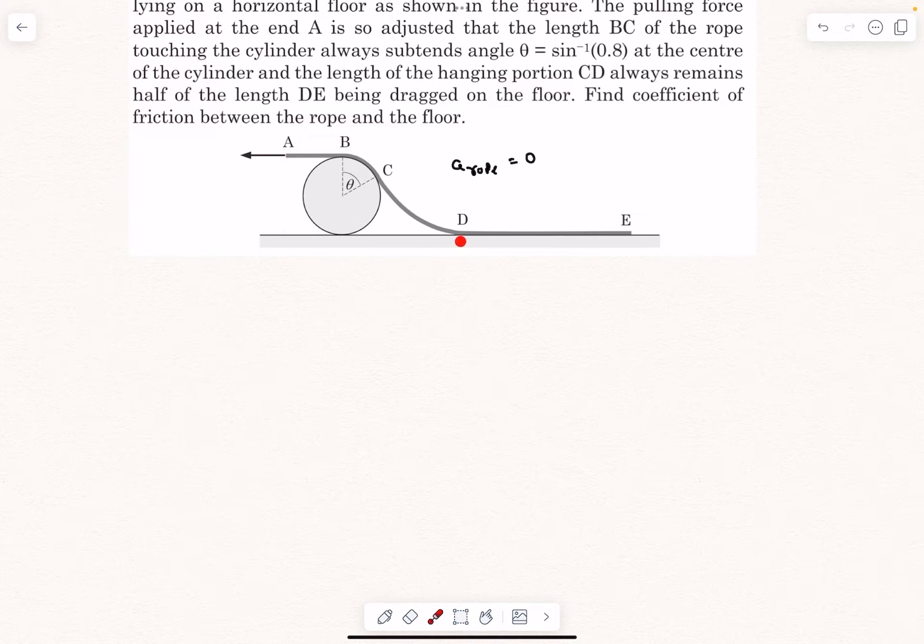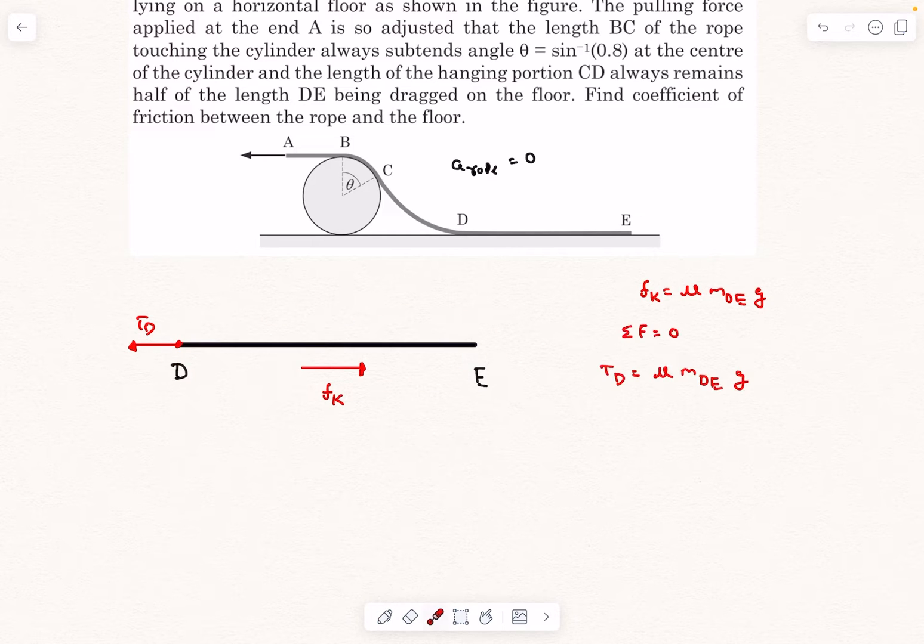First let's draw the FBD of this part of the rope DE. We can use force balance. At this particular end let's call the tension at end D as T_D. Now obviously as the rope is slipping against the floor there will be some kinetic friction force acting. Let's call it as F_K, and we can directly write F_K as the coefficient of friction multiplied by the normal reaction, which would be the mass of the part DE times G. So the acceleration of this part of the rope must be zero, which means we can say T_D equals μ M_DE times G. This would be our first equation.